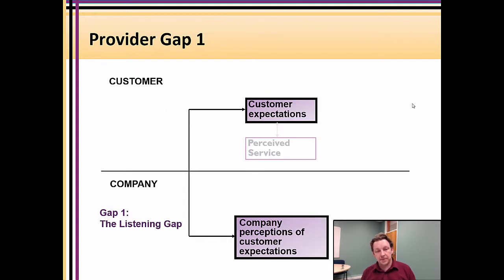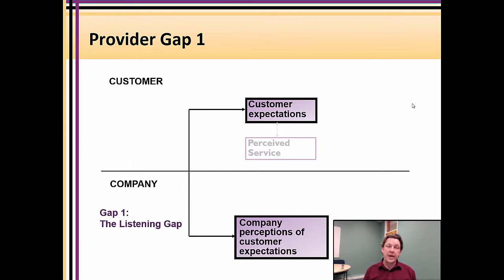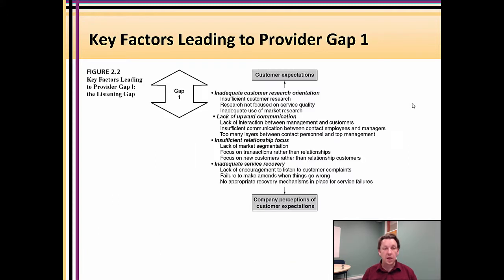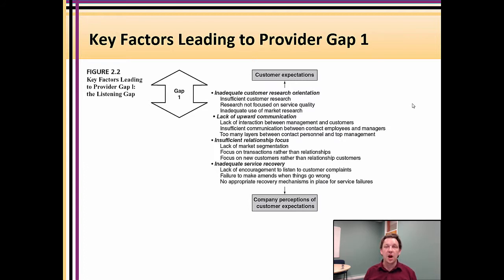Let's talk about provider gap one. This is the first area where you're dealing with the company's interpretation of the customer — what do we as service designers and providers think our customers are expecting? These gaps can come about through a variety of ways. One of them is a lack of market research. Market research is important in services marketing, and the services research track is one of the most heavily designed, carefully implemented areas where both qualitative and quantitative research skills are highly respected.